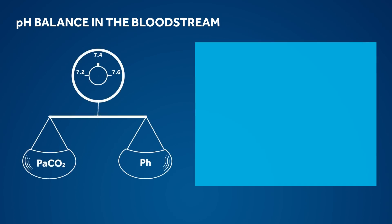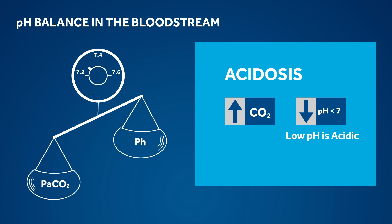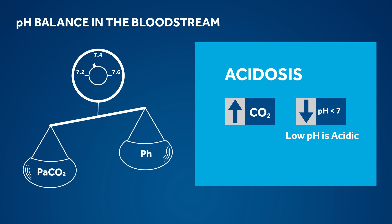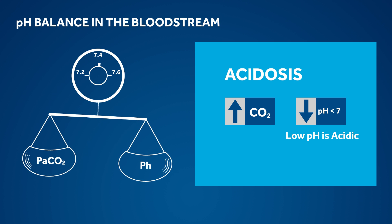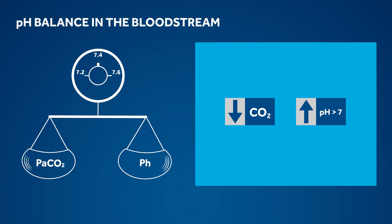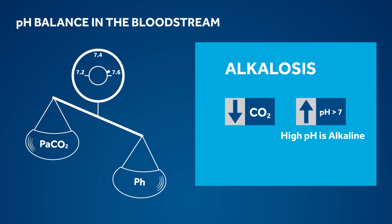CO2 is indirectly related to the pH of the blood, so when CO2 rises, the pH falls, becoming more acidic. In healthy individuals, the body continuously maintains pH in a normal range of 7.35 to 7.45, which is slightly alkaline compared to water. A blood pH drop below 7 can lead to coma or even death due to severe acidosis. Blood pH above 7.45 is called alkalosis, and a level above 8 can also lead to death.